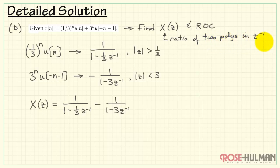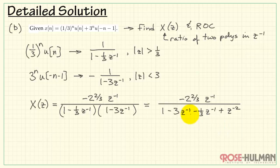Now we could be done at this point, except the problem statement asks us for the ratio of two polynomials in z inverse. So let me get these over a common denominator. Let me distribute the negative sign. Looks like the ones cancel nicely. And we're left with this result in the numerator. In the denominator, I'd like to multiply out these two factors. And then I will collect like terms in terms of z-inverses. And this is what we need.